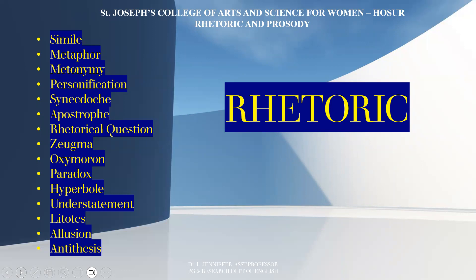Synecdoche: In Greek, the word synecdoche stands for 'taking together', and thus a part of something is used to signify the whole, or the whole is used to signify a part. Apostrophe: a direct address either to an absent person or to an abstract or inanimate entity. Rhetorical question: a question asked not to evoke an actual reply but to achieve an emphasis which is stronger than a direct statement. Zeugma: the use of a single word standing in the same grammatical relation to two other terms but with some alteration of meaning.